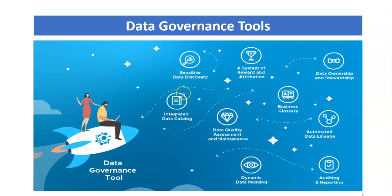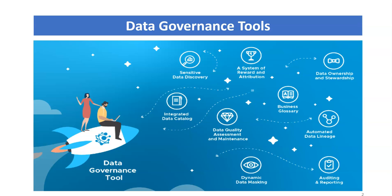There are a few tools that fall under the data governance category, such as sensitive data discovery, integrated data catalog, data quality assessment and maintenance, business glossary, system of reward and attribution, data ownership and stewardship, automated data lineage, and dynamic data masking. These are the tools that need to be supported by data governance tools.